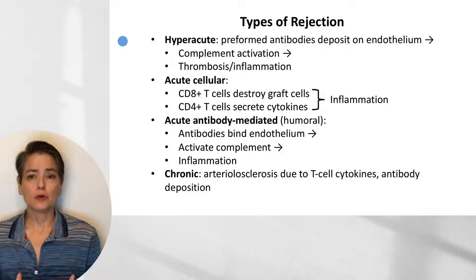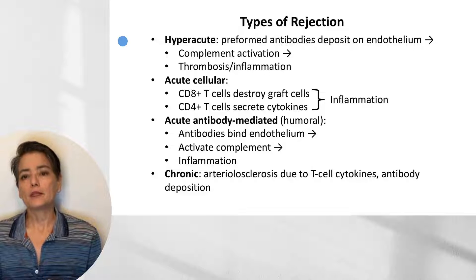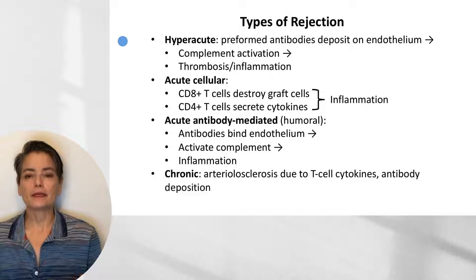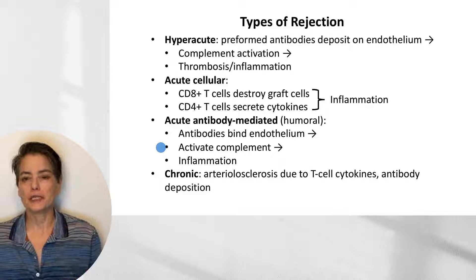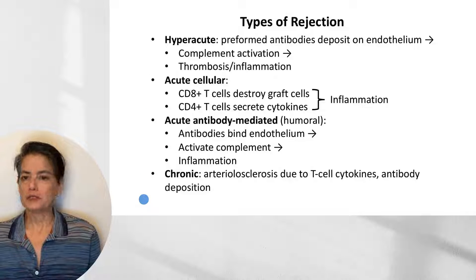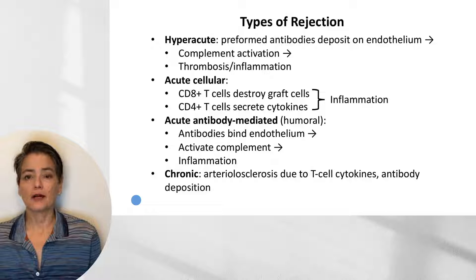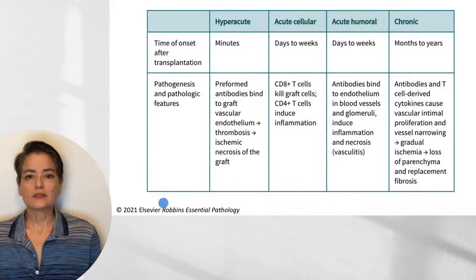Acute humoral rejection is really the same mechanism as hyperacute rejection; the difference is the time frame. In chronic rejection, we see arteriolosclerosis thought to be due to T cell cytokines and antibody deposition. A compare-and-contrast table from Robins Essential Pathology First Edition based on a renal transplant case is a very useful reference.